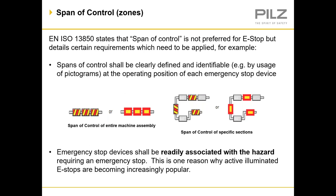EN ISO 13850 states that span of control is not preferred for e-stops but details certain requirements which need to be applied. For example, span of control shall be clearly defined and identifiable by the use of pictograms at the operating position of each emergency stop device. The example on the left shows a pictogram for an entire machine assembly, and the example on the right shows span of controls for specific sections or locations on that machine assembly. Emergency stop devices shall be readily associated with the hazard requiring emergency stop.